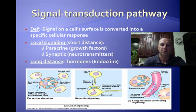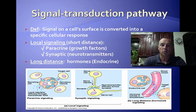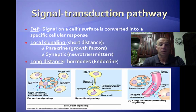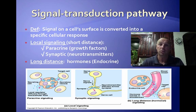Now, long distances are transmitted by hormones. The cell may create the hormone, put it into your bloodstream. The bloodstream will carry it to wherever that target cell may be, wherever it may be in your body. So that's your signal transduction pathway.